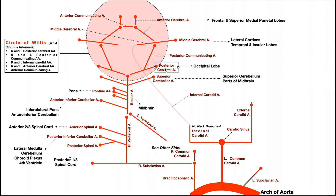The posterior cerebral arteries supply the posterior part of the cerebrum — the occipital lobes. The right posterior cerebral artery serves the right occipital lobe; the left serves the left occipital lobe. Now, recall we have two major vessels supplying all of this. We mentioned the vertebral arteries; now let's talk about the internal carotid artery. The common carotid artery bifurcates into an external carotid artery and the internal carotid artery.